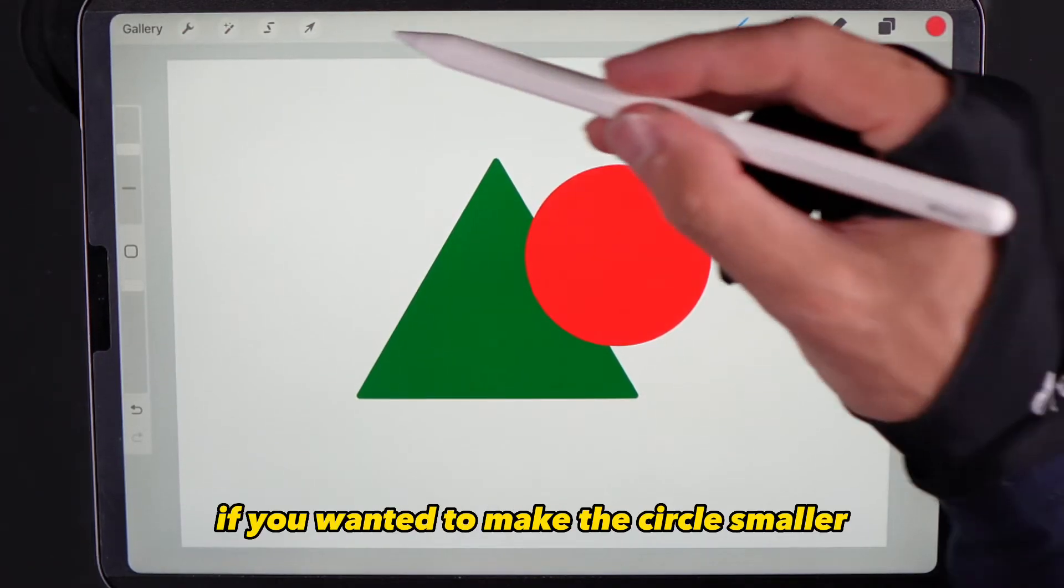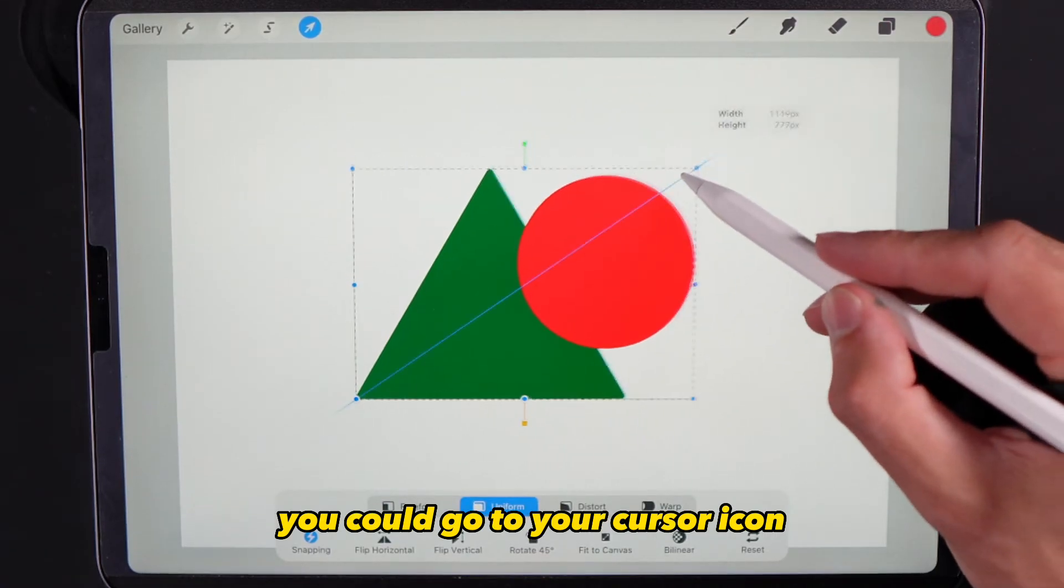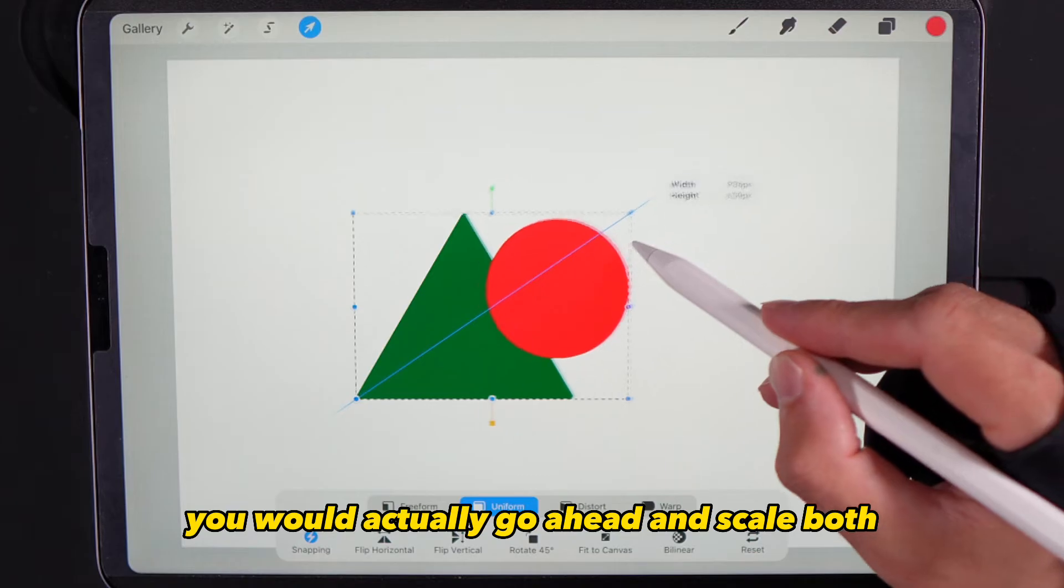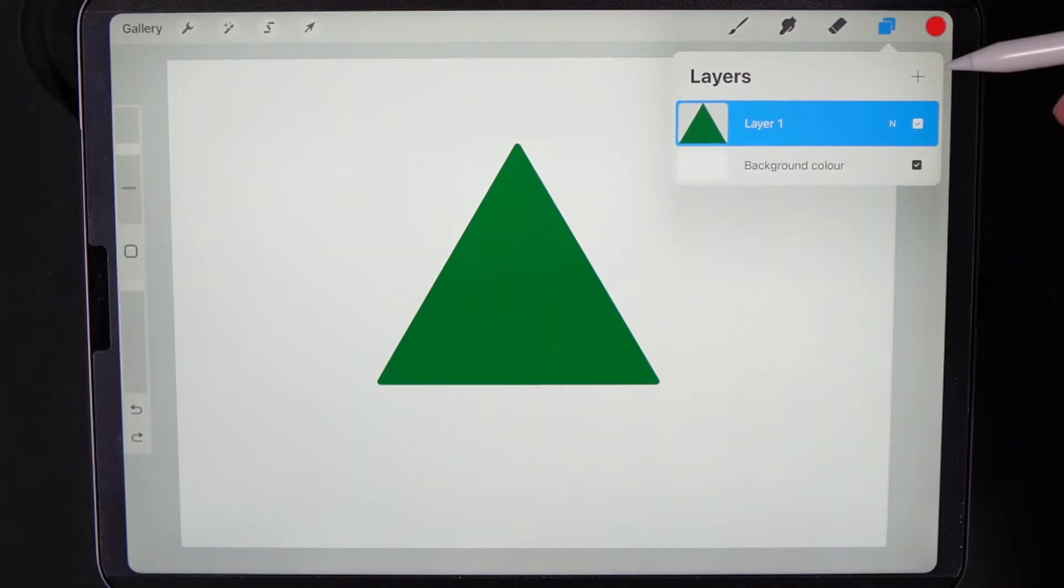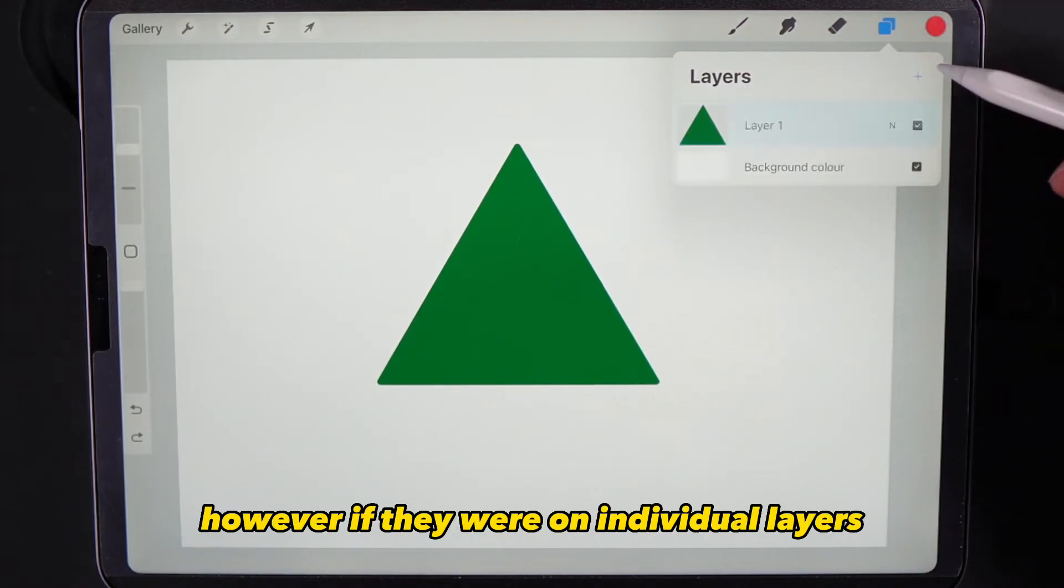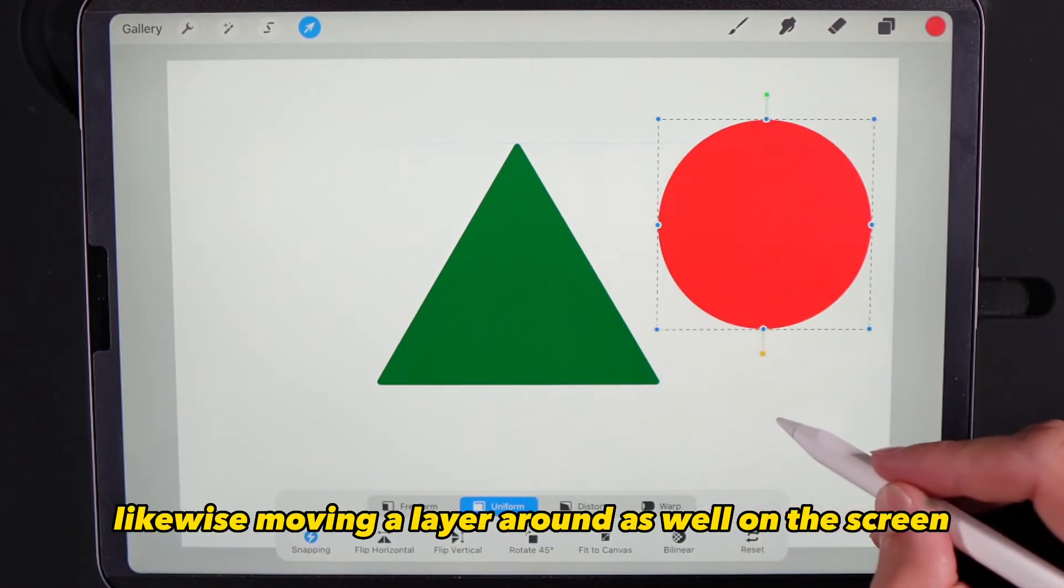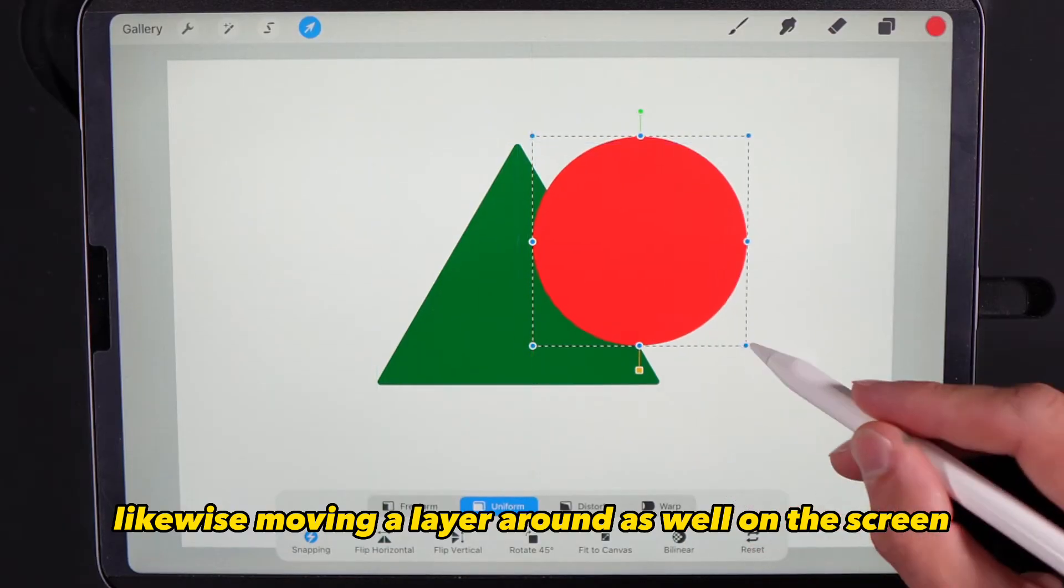In a similar example, if you wanted to make the circle smaller you could go up to your cursor icon and if you were to scale this up or down you would actually scale both items. However, if they were on individual layers you can scale any item up or down without affecting the other, likewise moving a layer around on the screen.